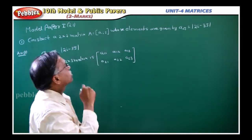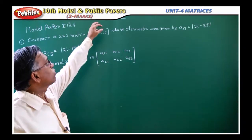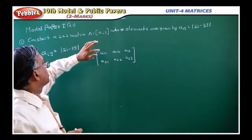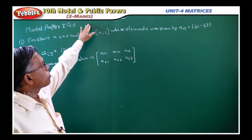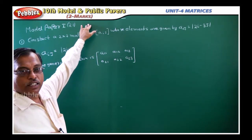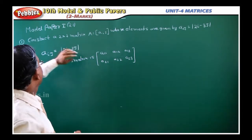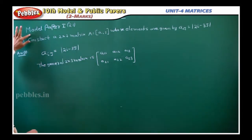We will see two more questions in the fourth chapter, Matrices. We are going to see model paper wise, then we will see the public papers. Model paper 1, question number 21.